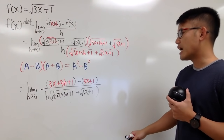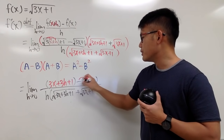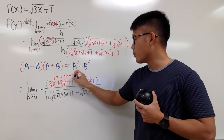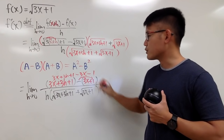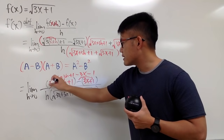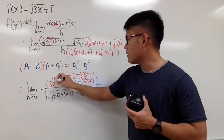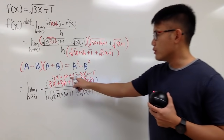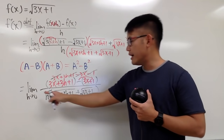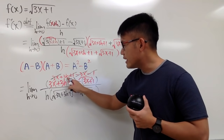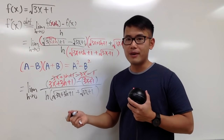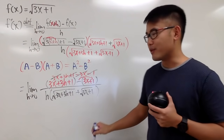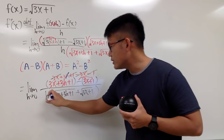We just have to fix the top a little bit more. Distribute: you get 3x plus 3h plus 1 minus 3x minus 1. 3x minus 3x becomes 0. Likewise, 1 minus 1 is also 0. So you pretty much have 3h on the top. On the bottom, you notice that you have h — and that h — you can cancel it out. I'll cross out this h with that h.